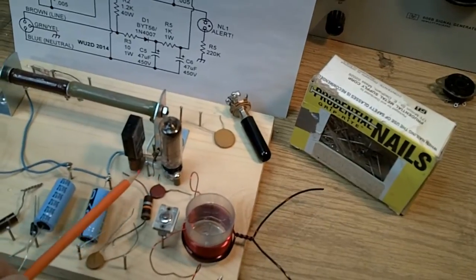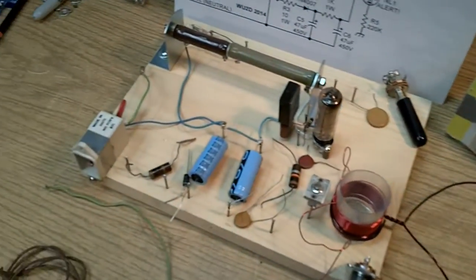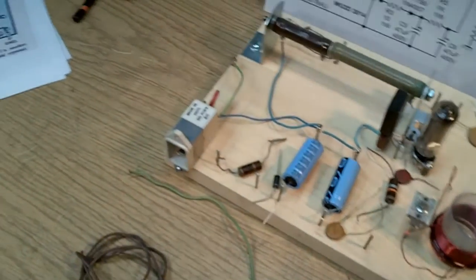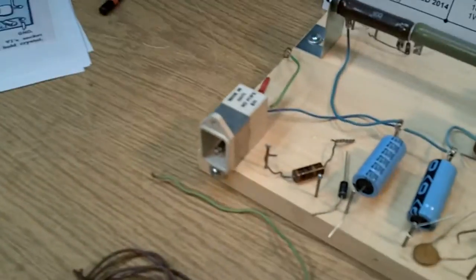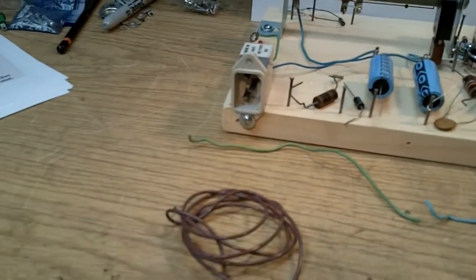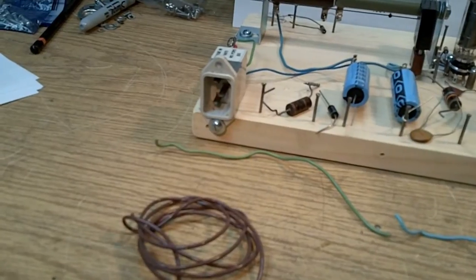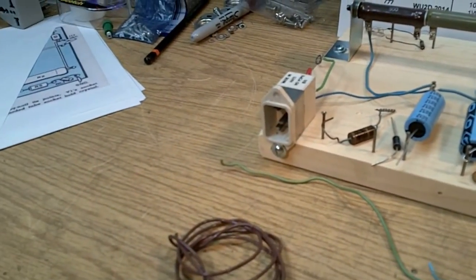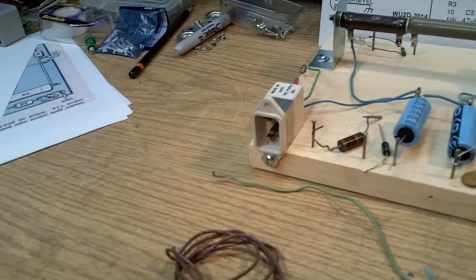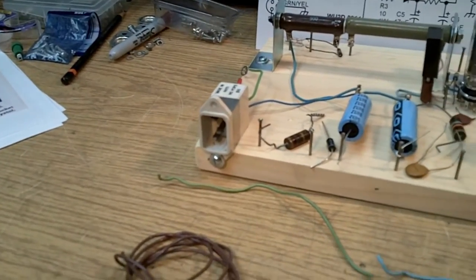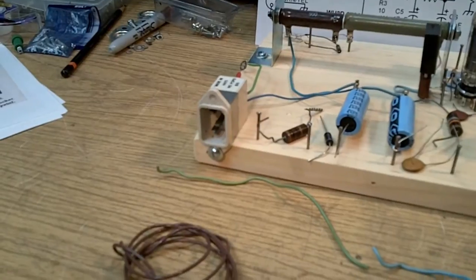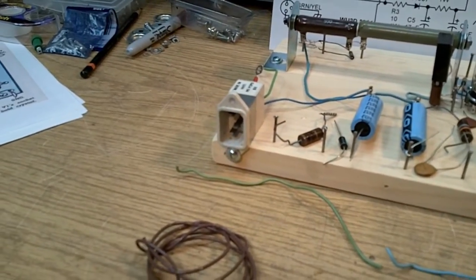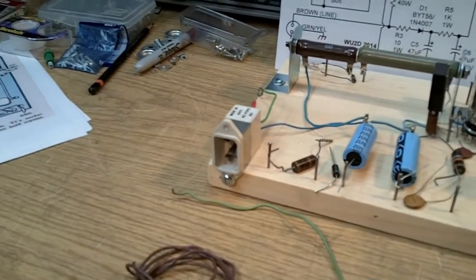I've mounted the tube socket and the crystal socket. Over here we've got an IEC inlet. Now that was stolen off an old ATX power supply. But that's a really nice starting point for building a safe breadboard system, because it gives you a defined line cord that you're going to plug in that's appropriate for your country.